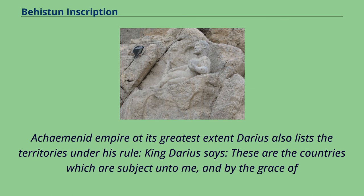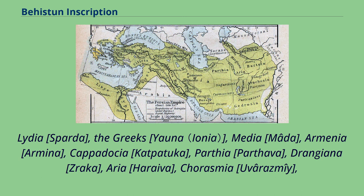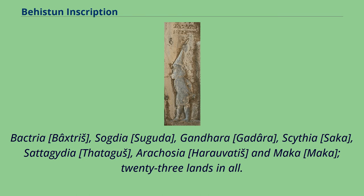Darius also lists the territories under his rule: 'These are the countries which are subject unto me, and by the grace of Ahuramazda I became king of them: Persia, Elam, Babylonia, Assyria, Arabia, Egypt, the countries by the sea, Lydia, the Greeks, Media, Armenia, Cappadocia, Parthia, Drangiana, Aria, Chorasmia, Bactria, Sogdia, Gandara, Scythia, Sattagydia, Arachosia, and Maka — 23 lands in all.'